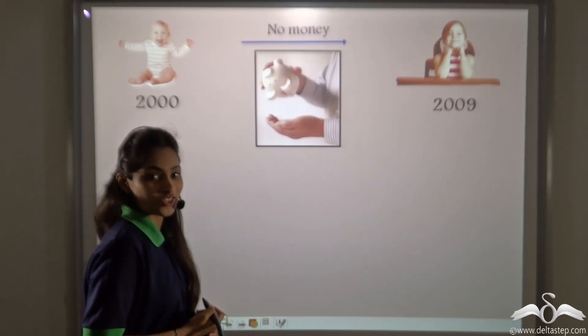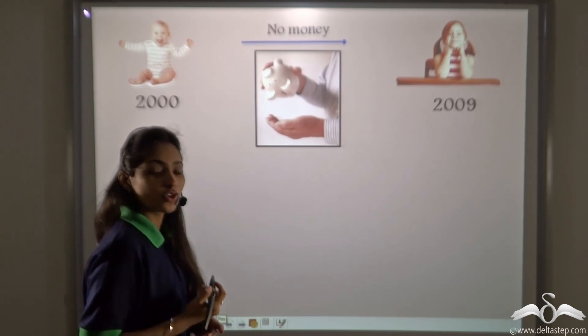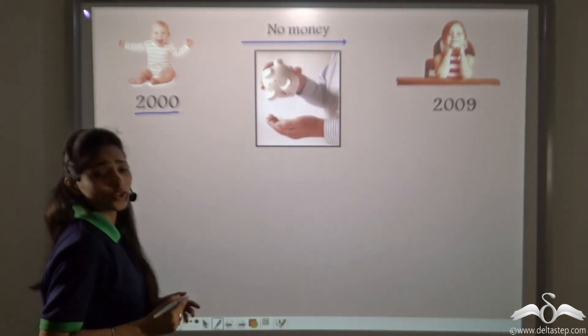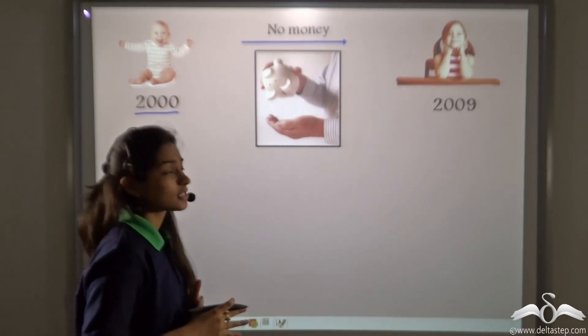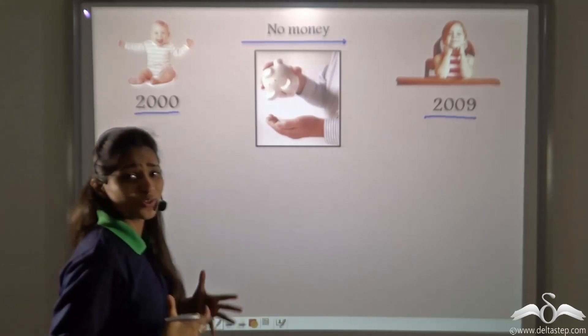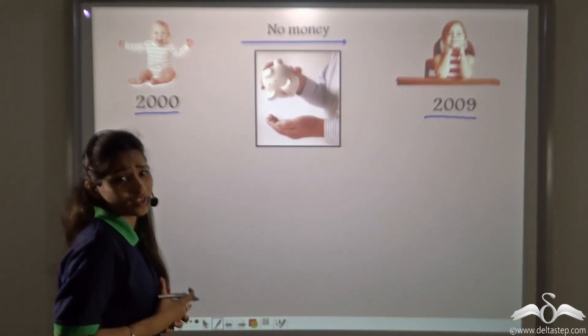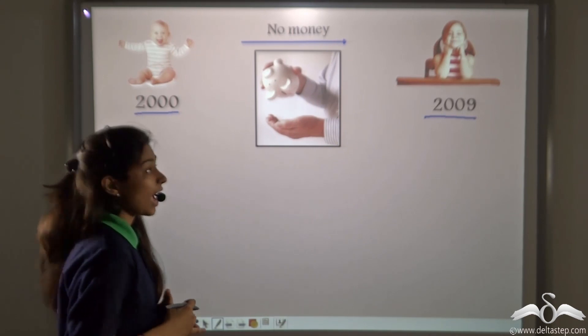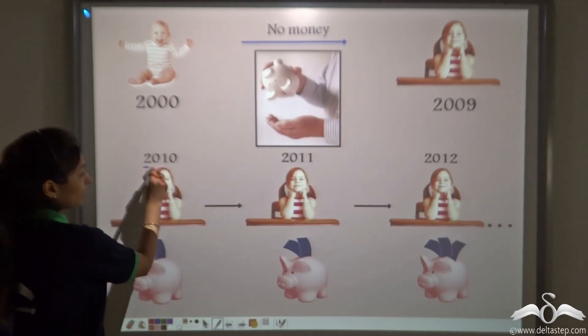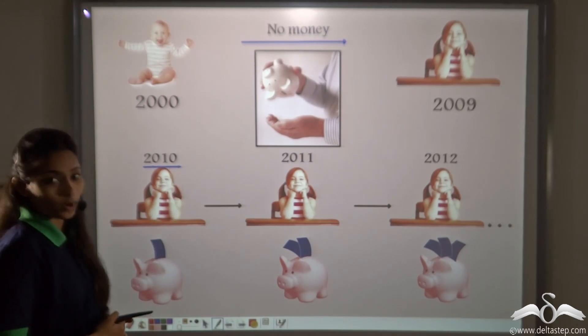Let's take a hypothetical situation in which suppose you were born in the year 2000 and you did not get any pocket money till the year 2009. After that you started asking your parents for some pocket money, and then from the year 2010 they started giving you rupees 100 as pocket money.